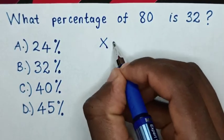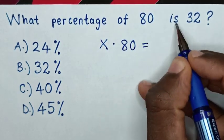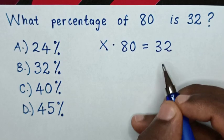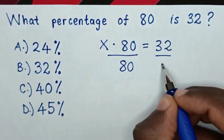Then of is times 80 is equal to 32. Then we divide by 80 in both sides.